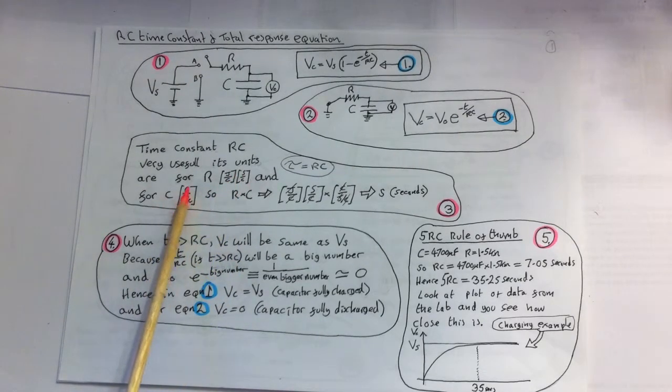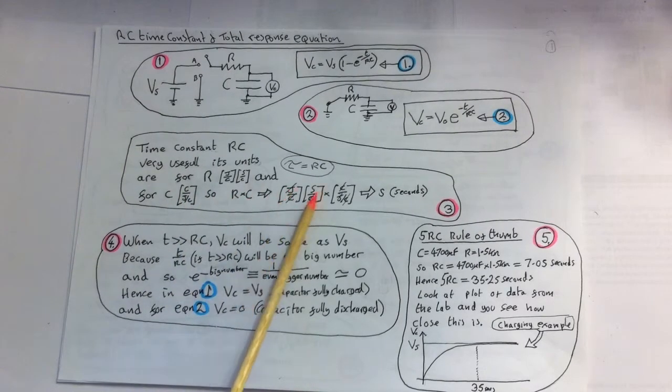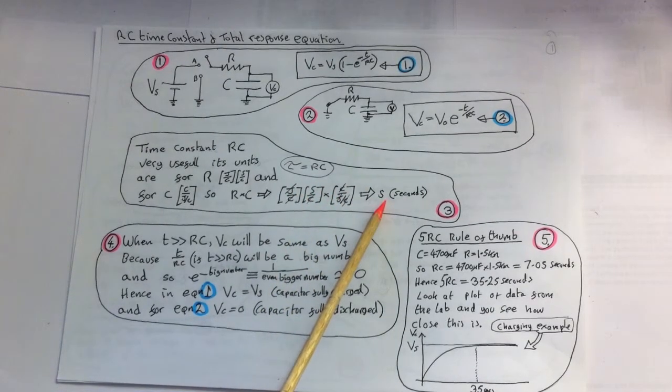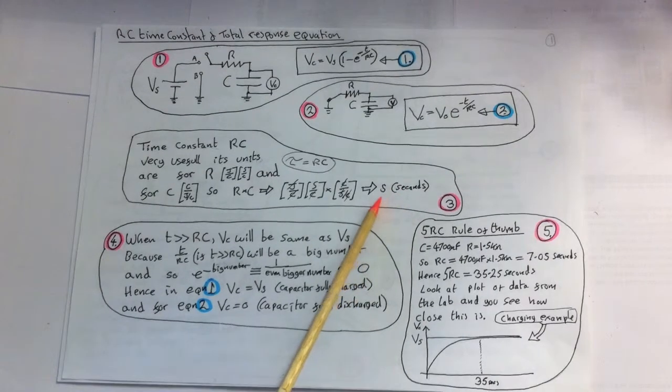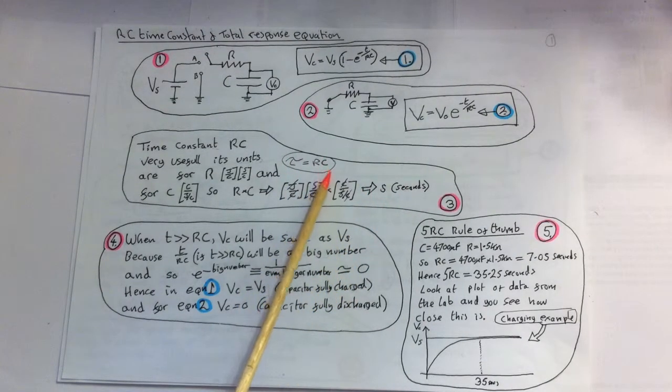And the capacitor units is C over joules per coulomb, then R times C, we just multiply these units out and you'll find that everything cancels, and we get, as we would expect, the units are in seconds. So RC's units are in seconds.